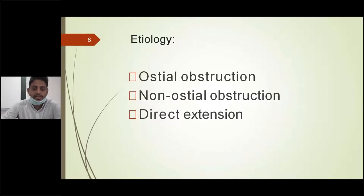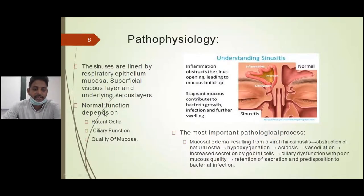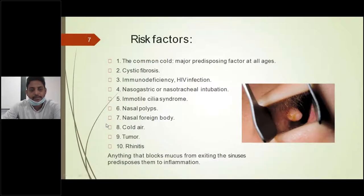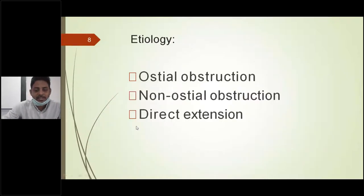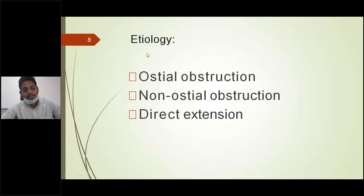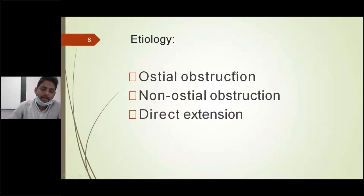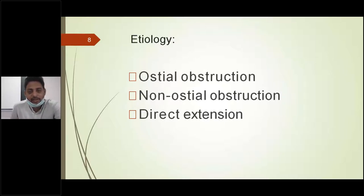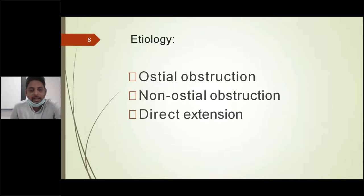Based on these three factors, the classic etiologies divide into three types: ostial obstruction, non-ostial obstruction, or direct extension. The causes of rhinosinusitis can be divided into ostial obstruction — meaning anatomical or physiological obstruction to the respective ostia, such as the maxillary ostium or frontal ostium — and any obstruction which impairs the drainage of mucosal secretions may cause rhinosinusitis.